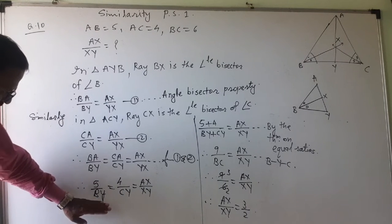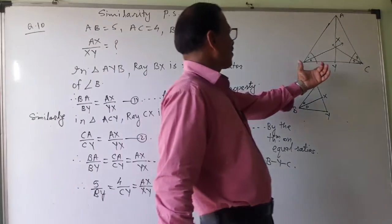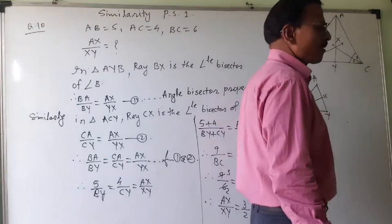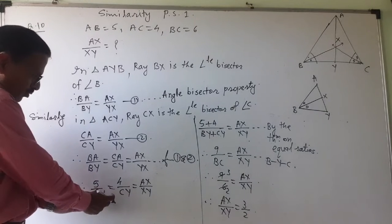Now if I add these two together, BY and CY. This BY and this CY, if I add it will become BC. And the value of BC is given. So I am adding these two.